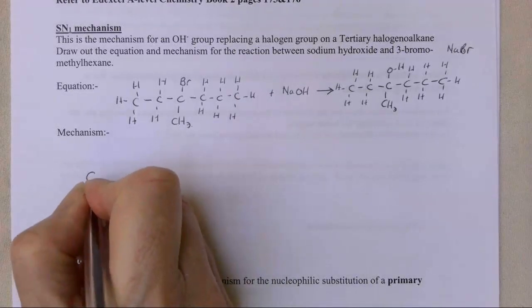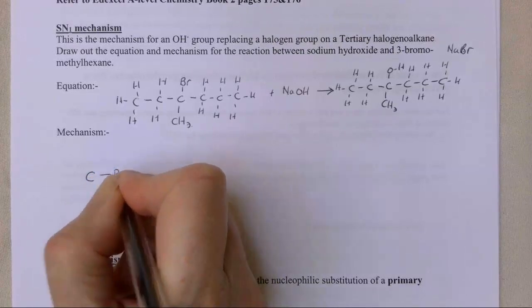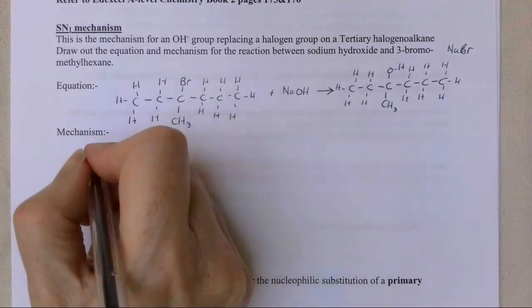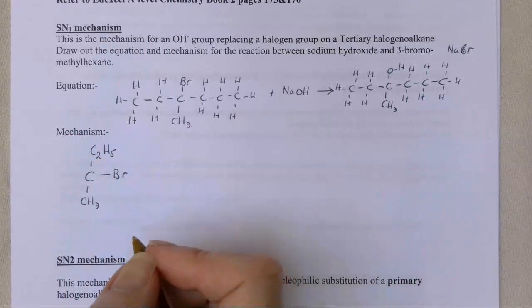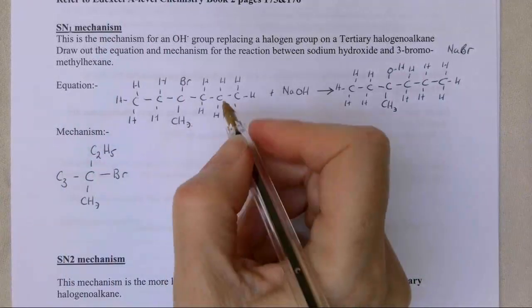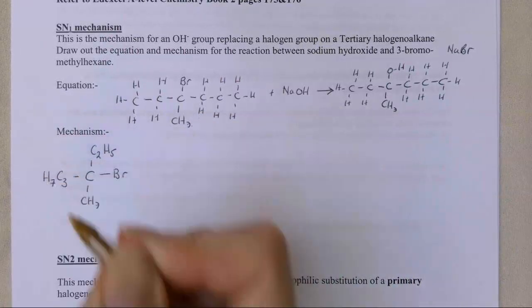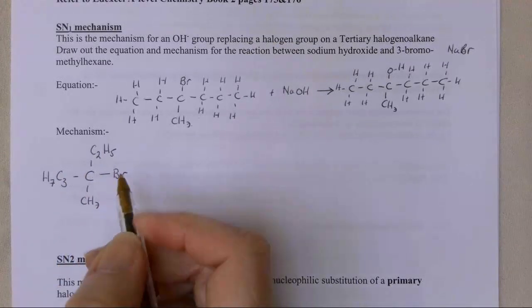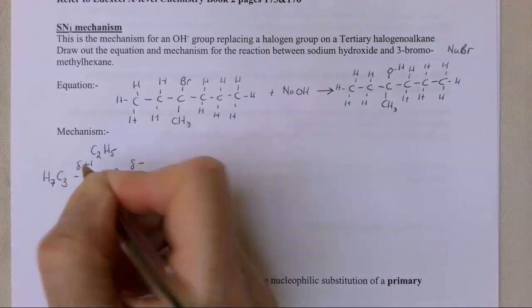The carbon I'm interested in is the carbon with the Br group on it. I've got a CH3 group, I've got these two carbons here so I've got a C2H5 group, and I've got a C3H7 group there. I'm not really interested in these two groups, I'm just drawing them as non-displayed formulas. Now there's a dipole on here because the bromine is delta negative and the carbon delta positive, because the bromine is more electronegative than the carbon.